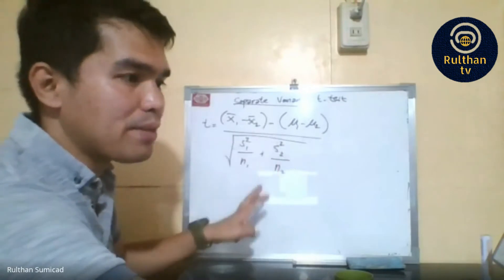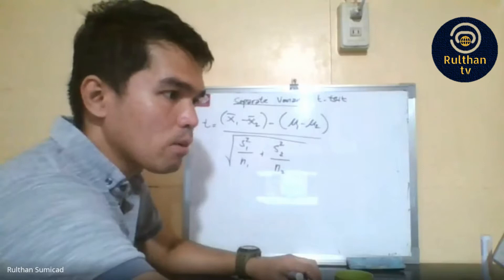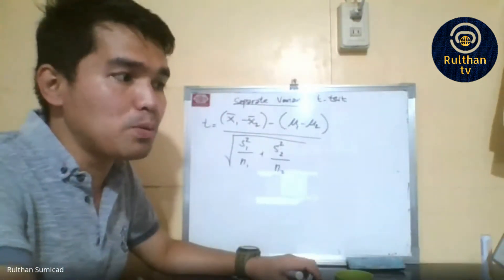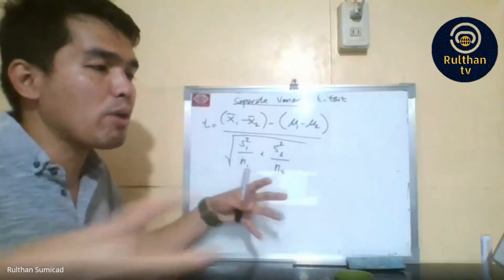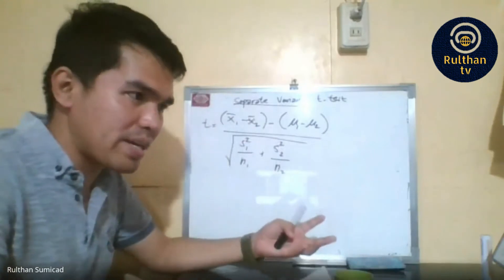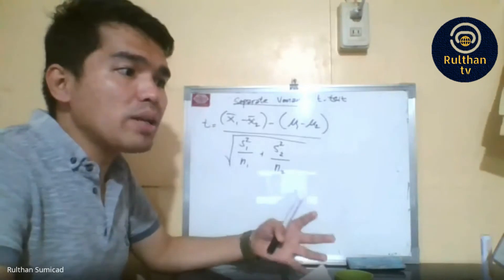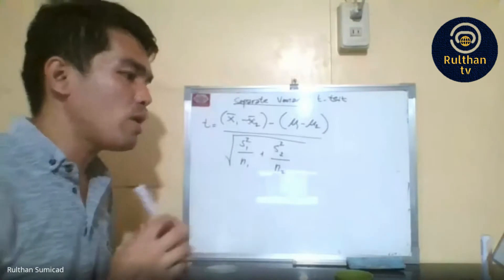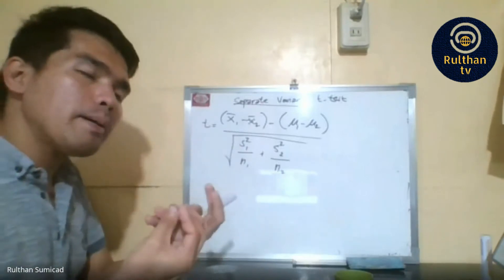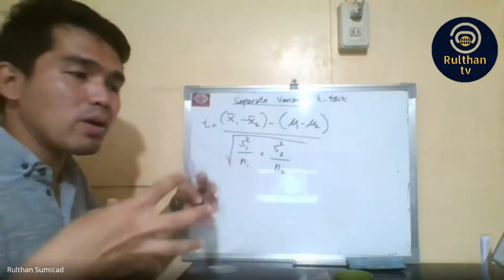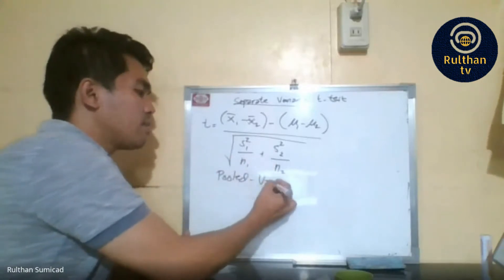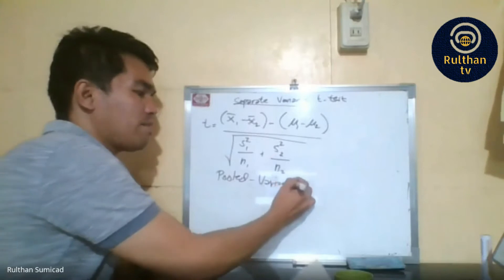With homogeneity of variances, we modify the standard error using what we call the pooled variance estimate. Instead of the separate variance formula, we pool together (combine) our two variances. This modified way of estimating the standard error involves pooling the two variances, which are adopted from the population variances under the assumption of homogeneity.